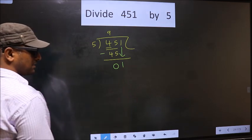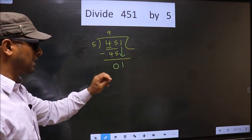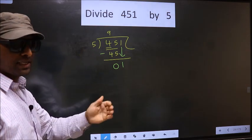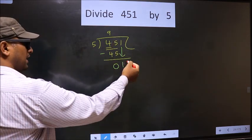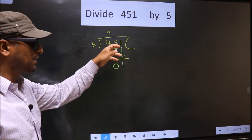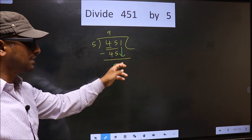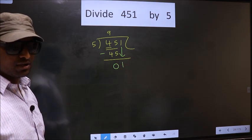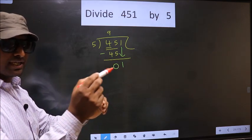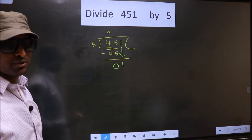This is where the mistake happens. Here we have 1, and here 5. 1 is smaller than 5, so what many do is they put a dot and take 0 here — which is wrong. Just now you brought a number down, and in the same step you want to put a dot and take 0. Which is wrong. I repeat: bringing the number down and putting a dot and taking 0 — both at the same step you are not supposed to do.